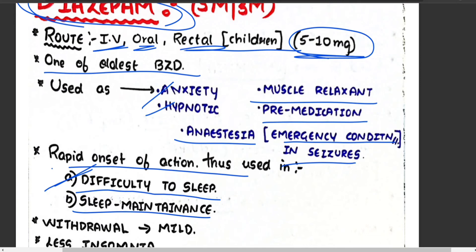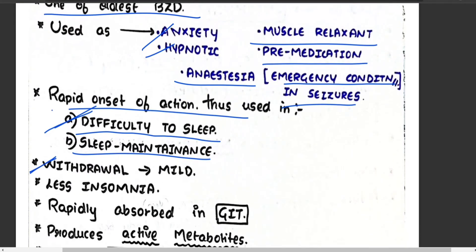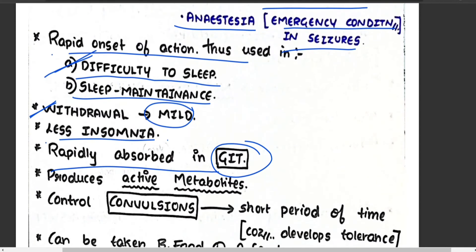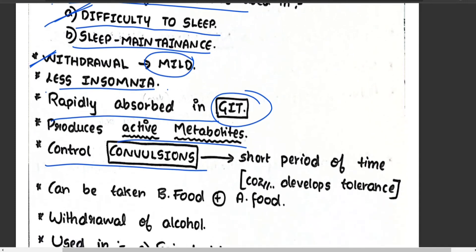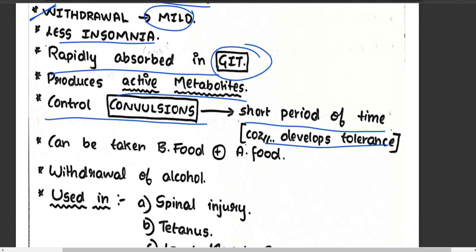Due to its rapid onset, diazepam is useful for patients with difficulty maintaining a consistent sleep schedule. It has mild withdrawal syndrome — not severe enough to cause significant dependence. It decreases insomnia, is rapidly absorbed from the GIT, produces active metabolites, helps control convulsions, and has a shorter duration of action — meaning tolerance development is negligible.